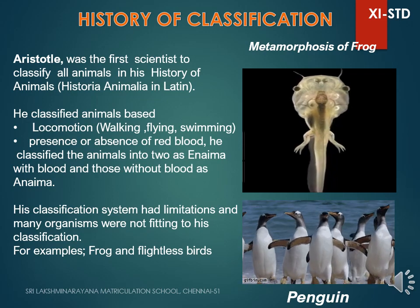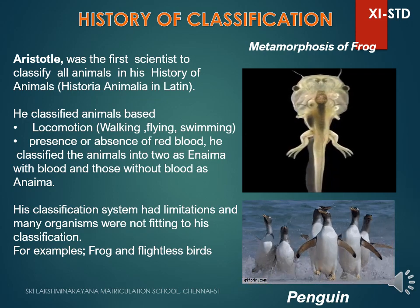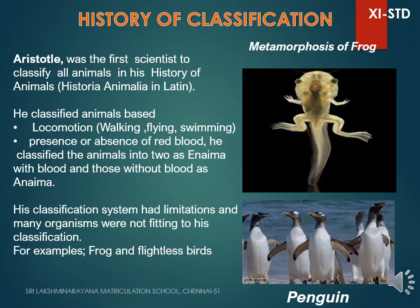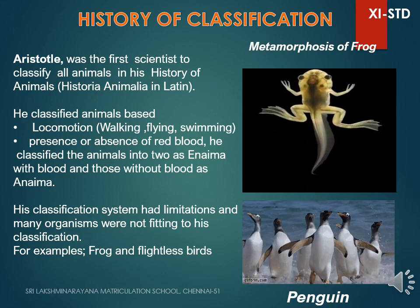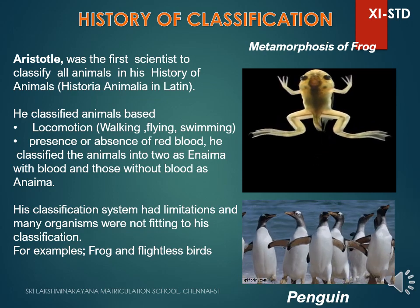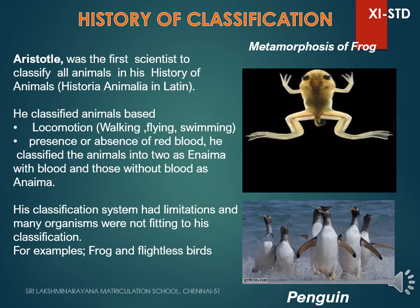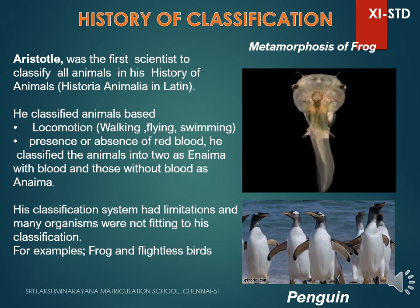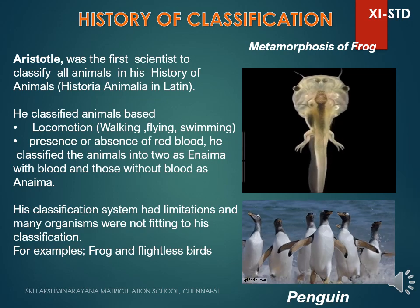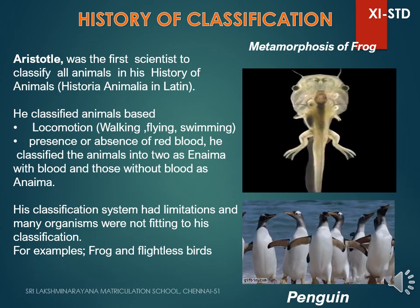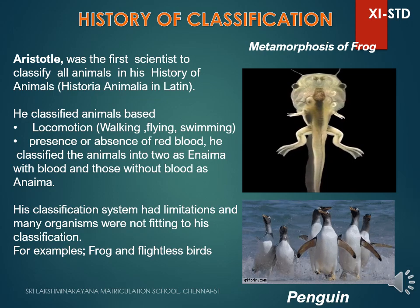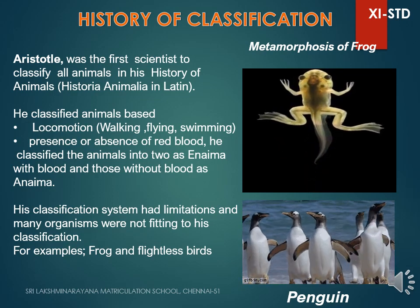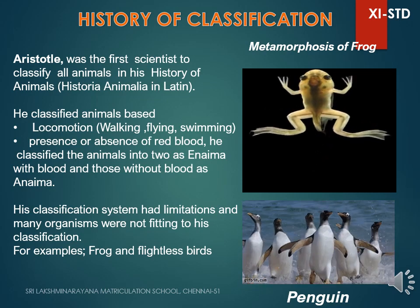Aristotle's classification system had some limitations, and many organisms were not fitting into his classification. For example, the metamorphosis of a frog shows that frogs can live both on land as well as in water. So, according to him, how do we classify frogs and where do we place them? In the tadpole stage, frogs breathe with the help of gills and can swim, making it very difficult to classify frogs according to Aristotle.